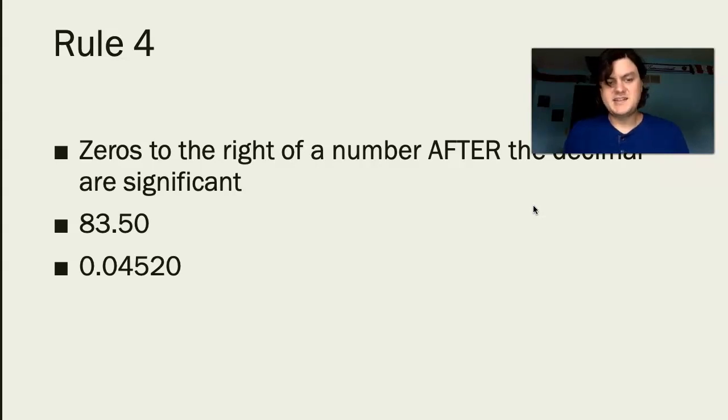For the second example here, 0.04520, the leftmost digits, if you recall rule number 3, are not significant. And the rightmost digit is significant because it's at the end of the number after the zero.